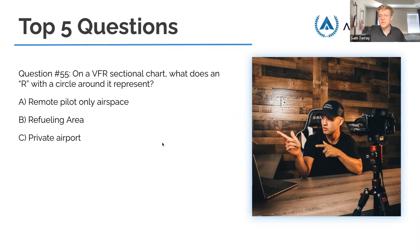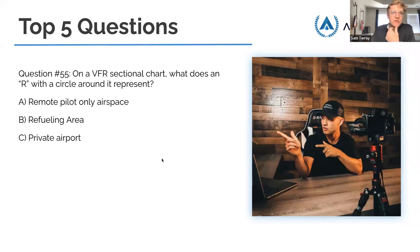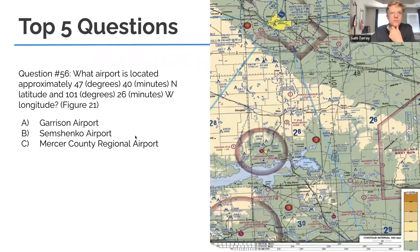On a VFR sectional chart, what does an R with a circle around it represent? The answer is C — private airport. The way to remember it: R stands for restricted, as in access is restricted — it's a private airport. When you see that symbol, you know it's not a public-use facility.